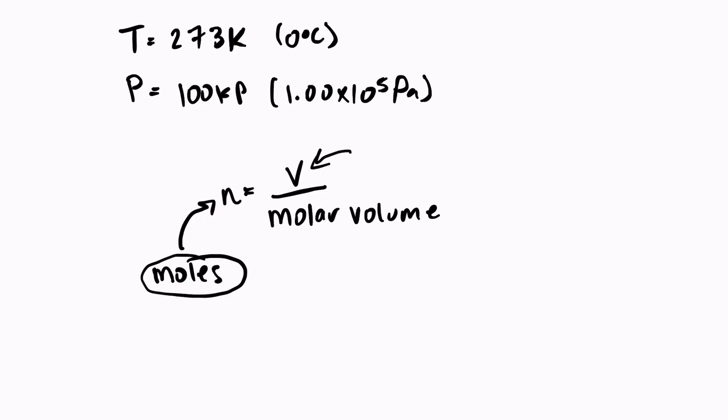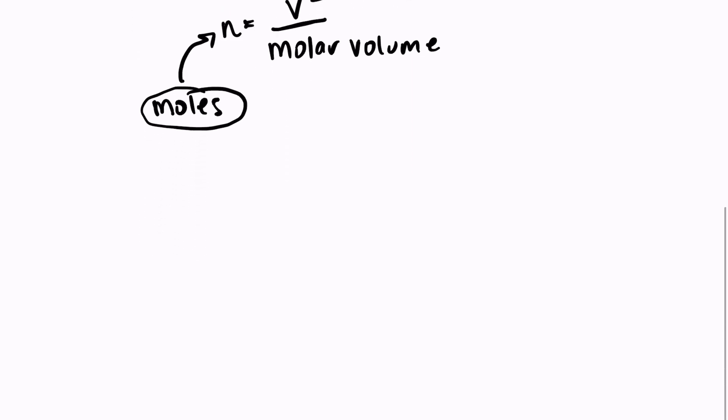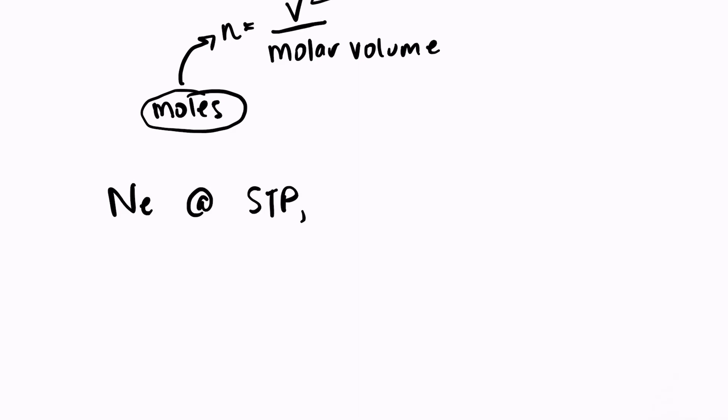So let's try an example. If we have neon at standard temperature and pressure, and it has a volume of 150 milliliters, how many moles of neon are in that area? So we can use our formula N equals V over molar volume.